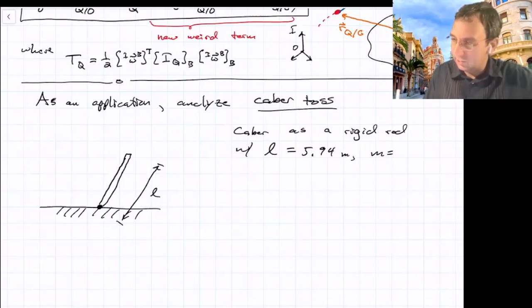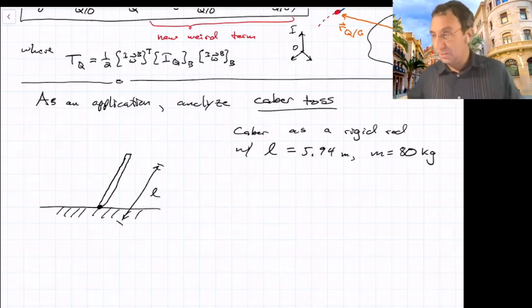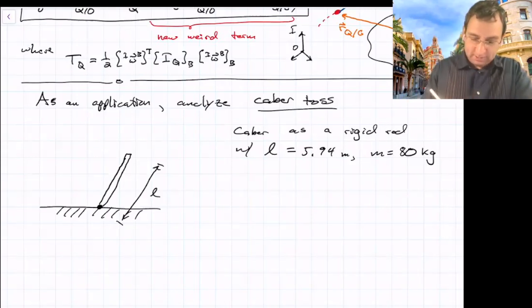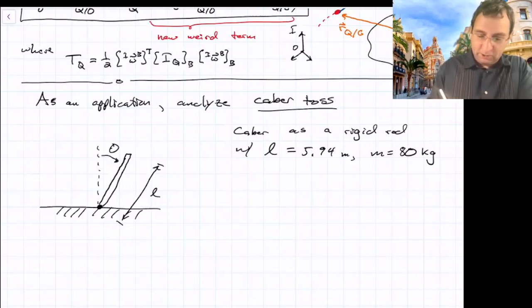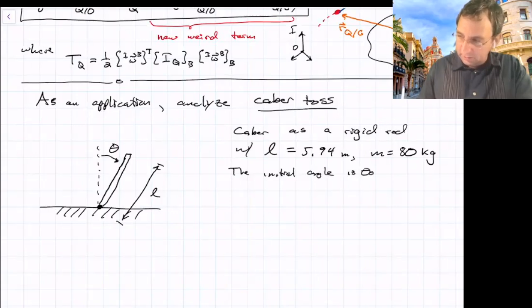And the mass is 80 kilograms. So what's that? Over 160, 170 pounds. These are not easy to lift. The people who do it are pretty buff. So we'll say it plants into the ground at some initial angle. And we're going to track what that angle does. So the initial angle is theta with respect to the vertical.